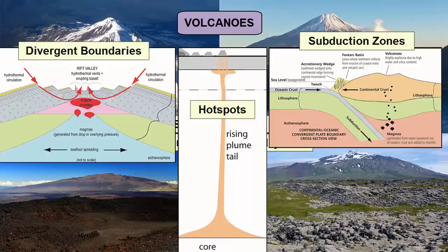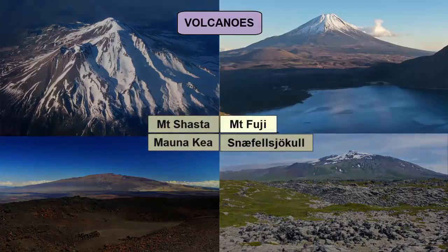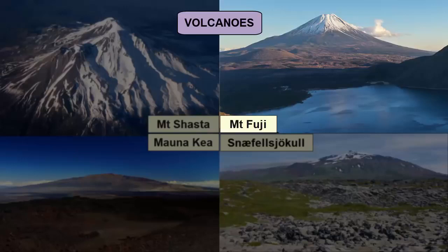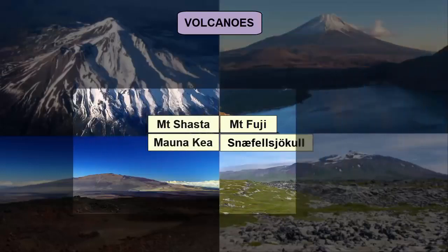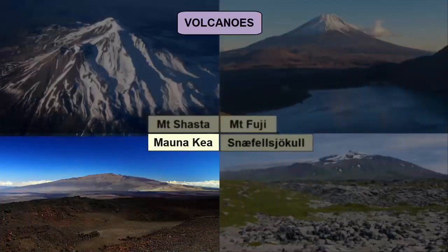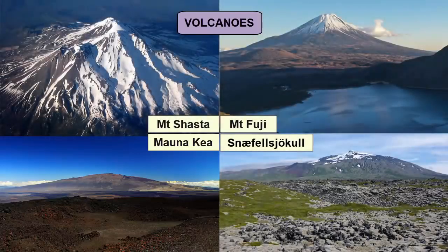Volcanoes are found wherever we melt the mantle, which happens at divergent plate boundaries, subduction zones, and hot spots. Volcanoes can be spectacularly steep like Mount Fuji, a stratovolcano towering almost four kilometers above its surroundings, or gently sloping giants like Mauna Kea in Hawaii — broad shield volcanoes that rise upward just over nine kilometers above the surrounding seafloor. For more information on volcanoes, plate tectonics, and hot spots, watch the video tutorials on these subjects.